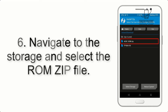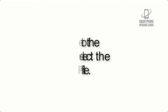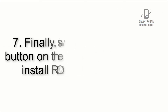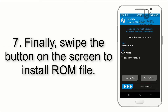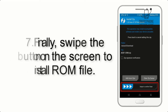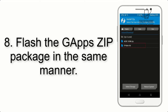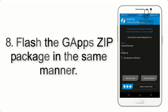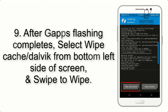Step 5: Go back to the recovery main screen and tap on the Install button. Step 6: Navigate to the storage and select the ROM zip file. Step 7: Finally, swipe the button on the screen to install the ROM file.